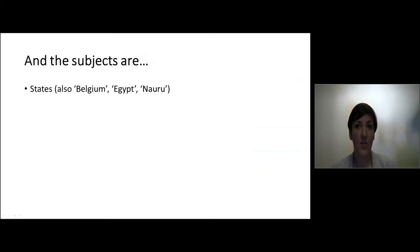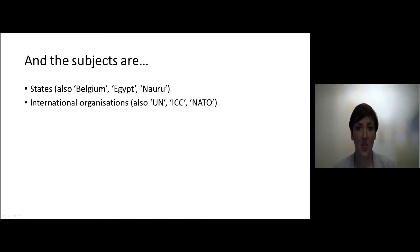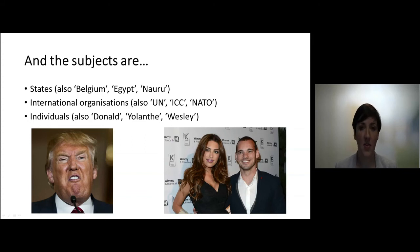The subjects are the states — and not only states as a group, but also individual states. So you can say, for example, that Belgium is a subject of international law, or that Egypt is a subject of international law, or even a small state is a subject of international law. And international organizations — not only as a category, but also individual international organizations can be considered subjects of international law. And finally, individuals: not only individuals as a group, but also specific individuals such as Donald, Vespe, or Yolanda are subjects of international law.